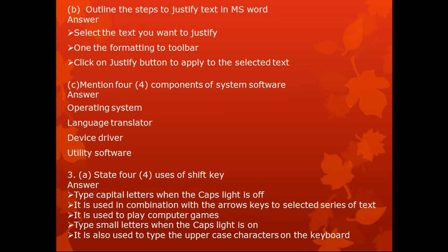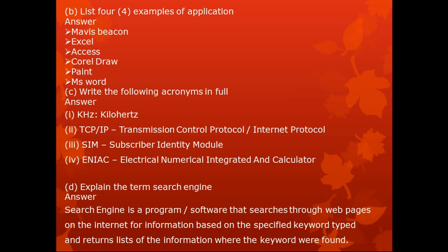Question 3B. List four examples of application software: Mavis Beacon, MS Excel, MS Access, Quattro, Paint, MS Word. Question 3C. Write the following acronyms in full: KHz — kilohertz, TCP/IP — Transmission Control Protocol/Internet Protocol, SIM — Subscriber Identity Module, ENIAC — Electronic Numerical Integrator and Calculator. ENIAC is an example of a first-generation computer; we will explore generations of computers in future lessons.